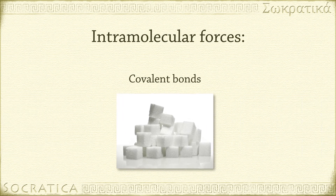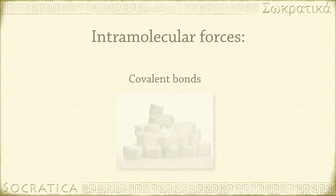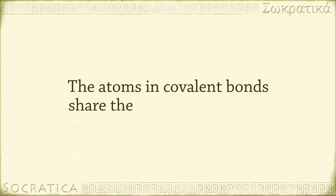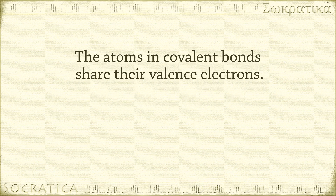Covalent bonds are stable because the bonding atoms achieve noble gas configuration by sharing electrons. The name covalent should suggest to you that the atoms are sharing their valence electrons. We can show this with a Lewis dot diagram.